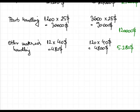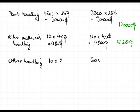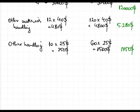The other handling for orders is allocated based on the number of orders: 10 for product A and 60 for product B. The cost per order is $25, so the total cost for product A is $250 and for product B is $1,500, amounting to a total of $1,750.